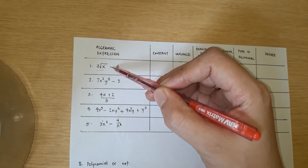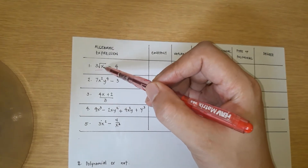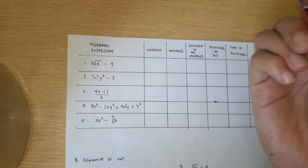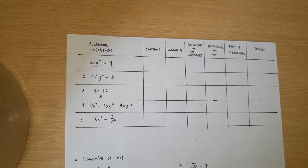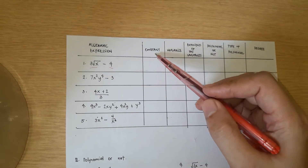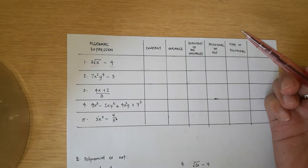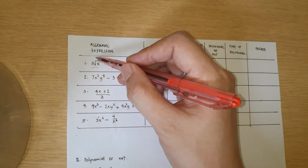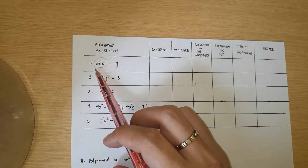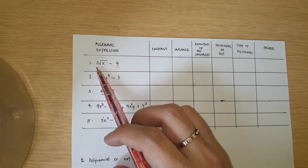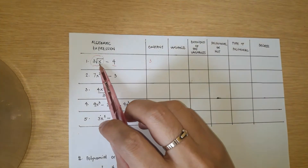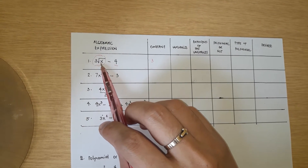There is also multiplication because 3√x is the same as 3 times √x. An algebraic expression usually consists of a constant, a variable, and an exponent of the variable. For the first term, 3√x, the constant is 3 — constants are typically numbers. The variables are the letters which represent the unknown, so here the variable is x.